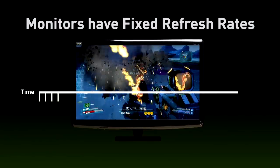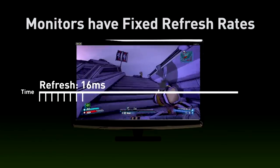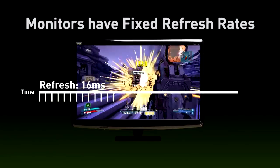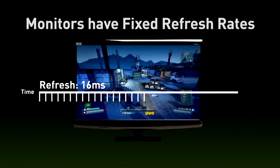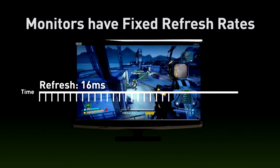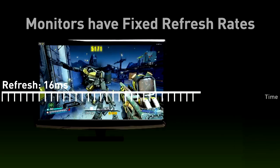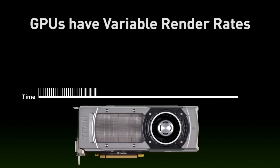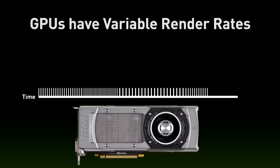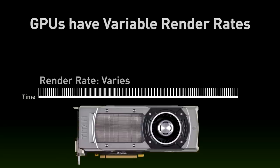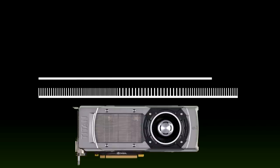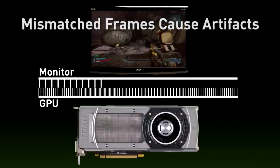Your game has frame rate variation. The game is rendering between 30 and 60, or maybe it's 45. But the weird part is, what does it mean when the game is rendering at 40, but the screen's updating at 60? What does that mean?